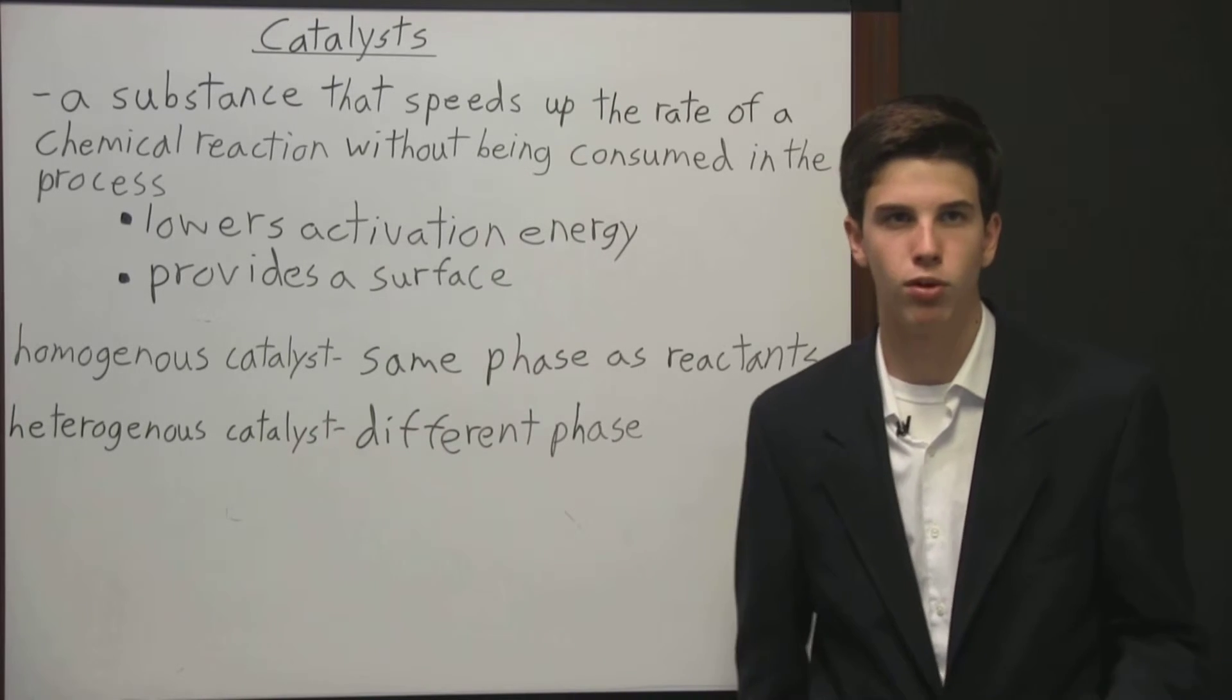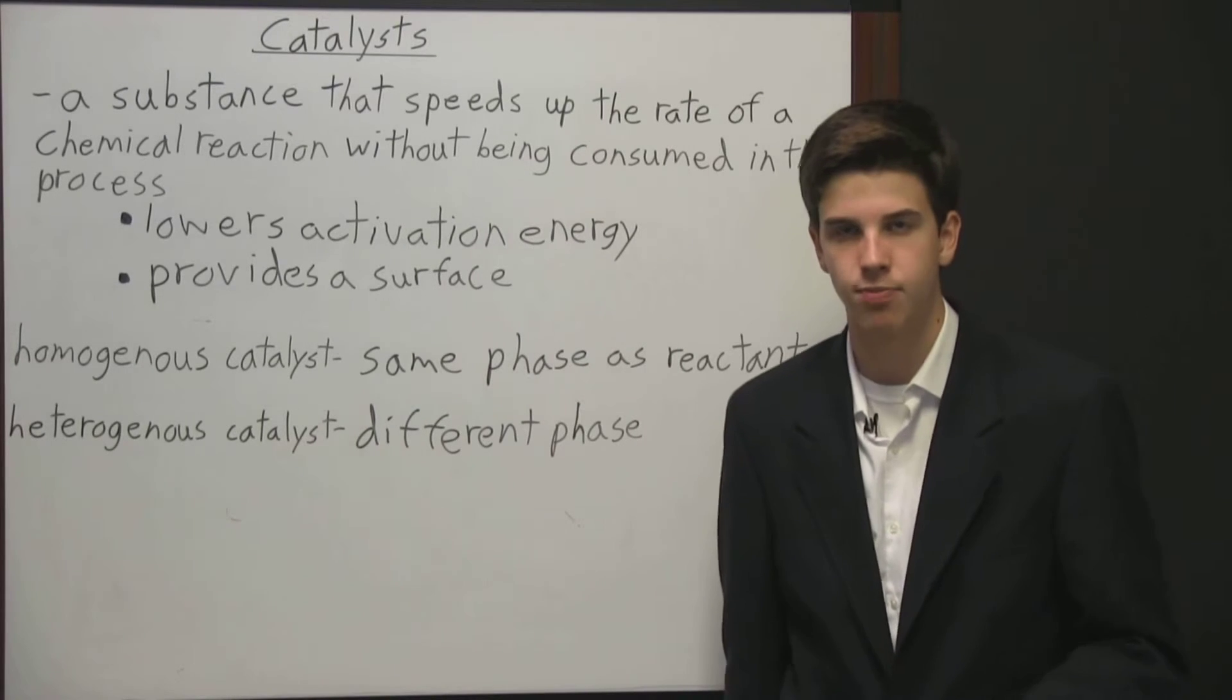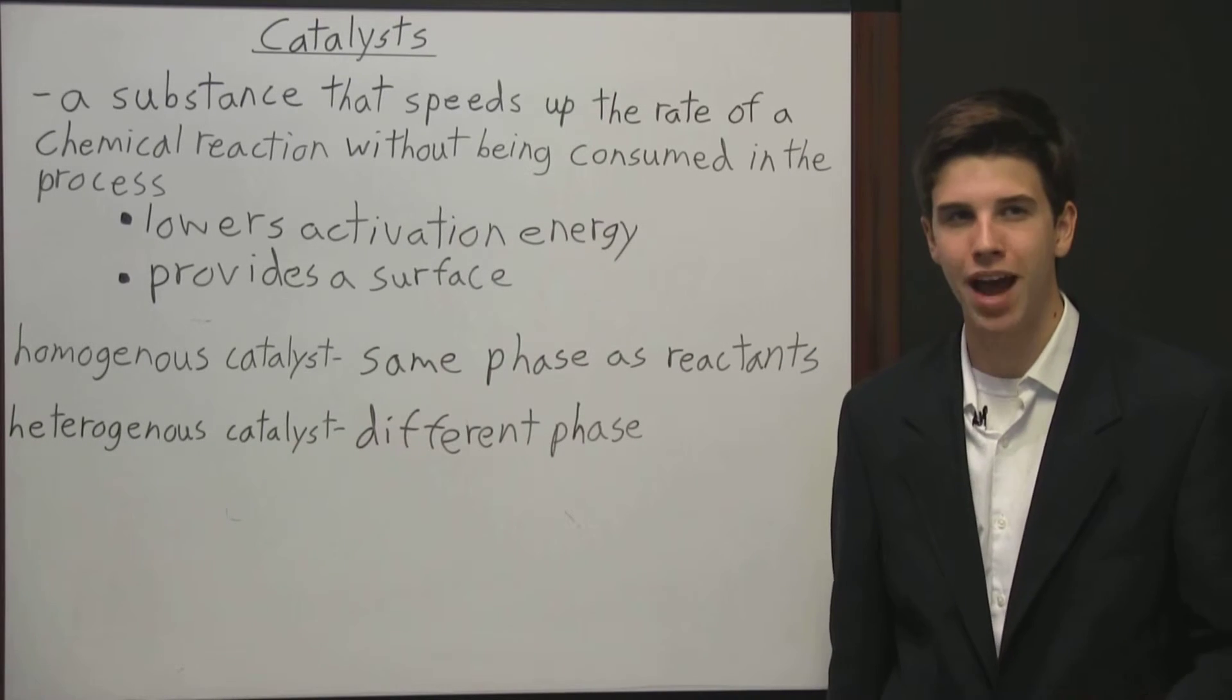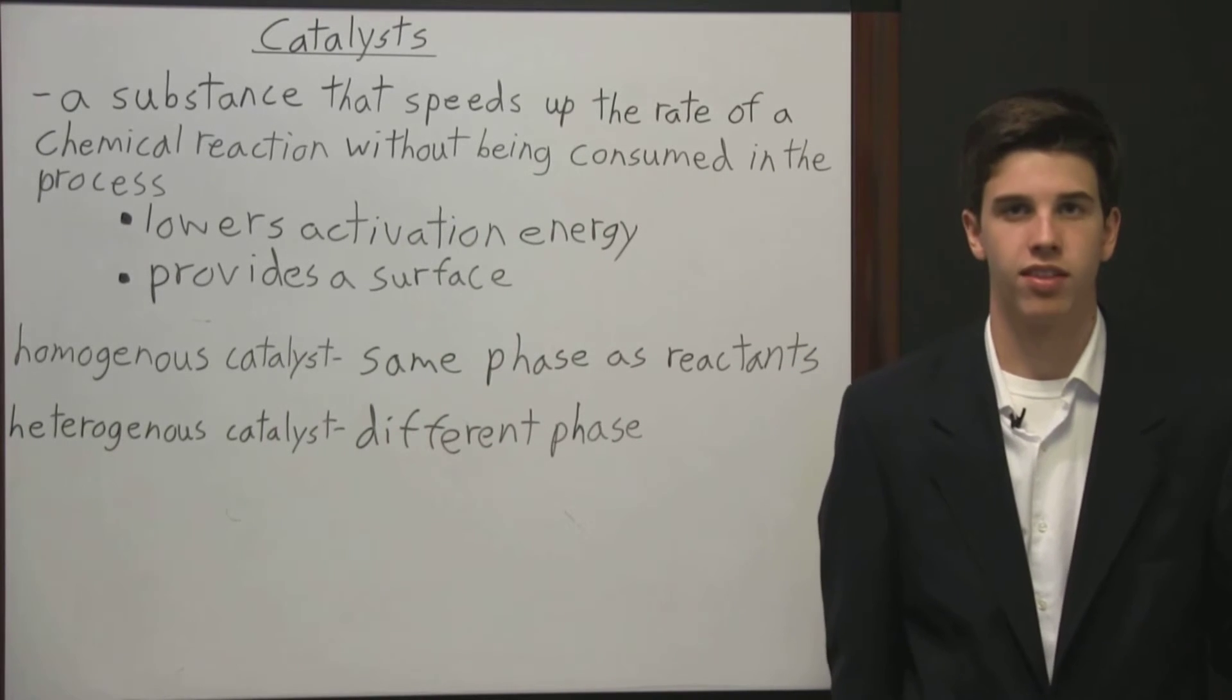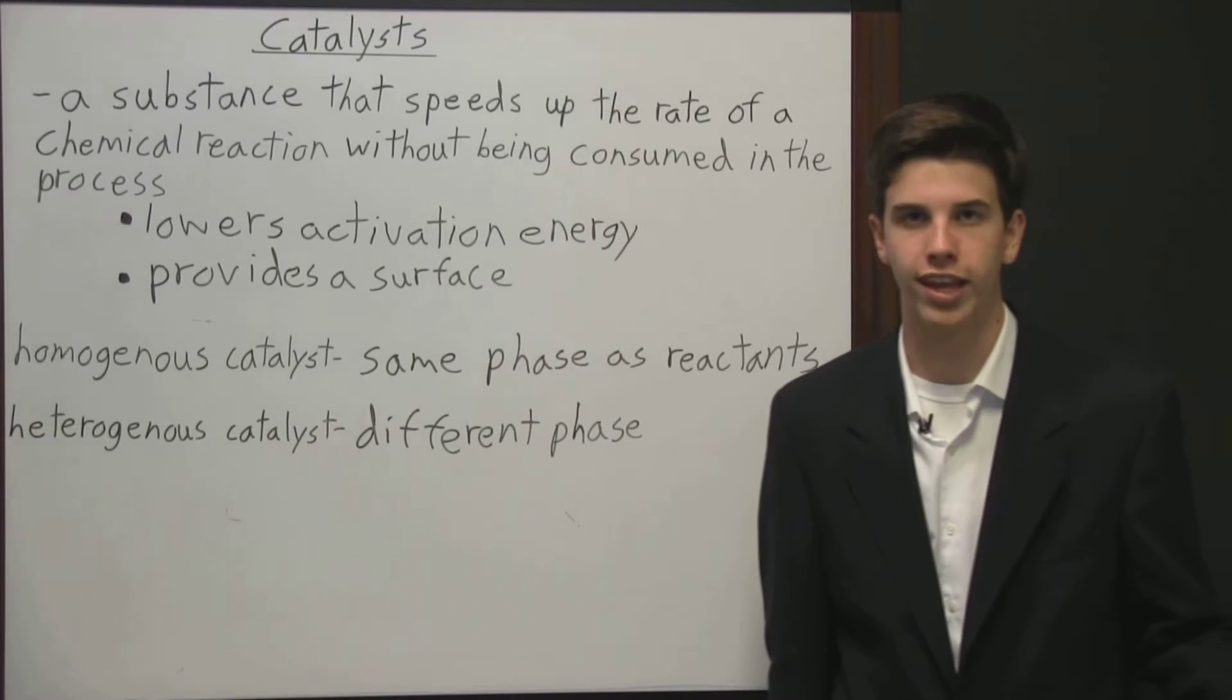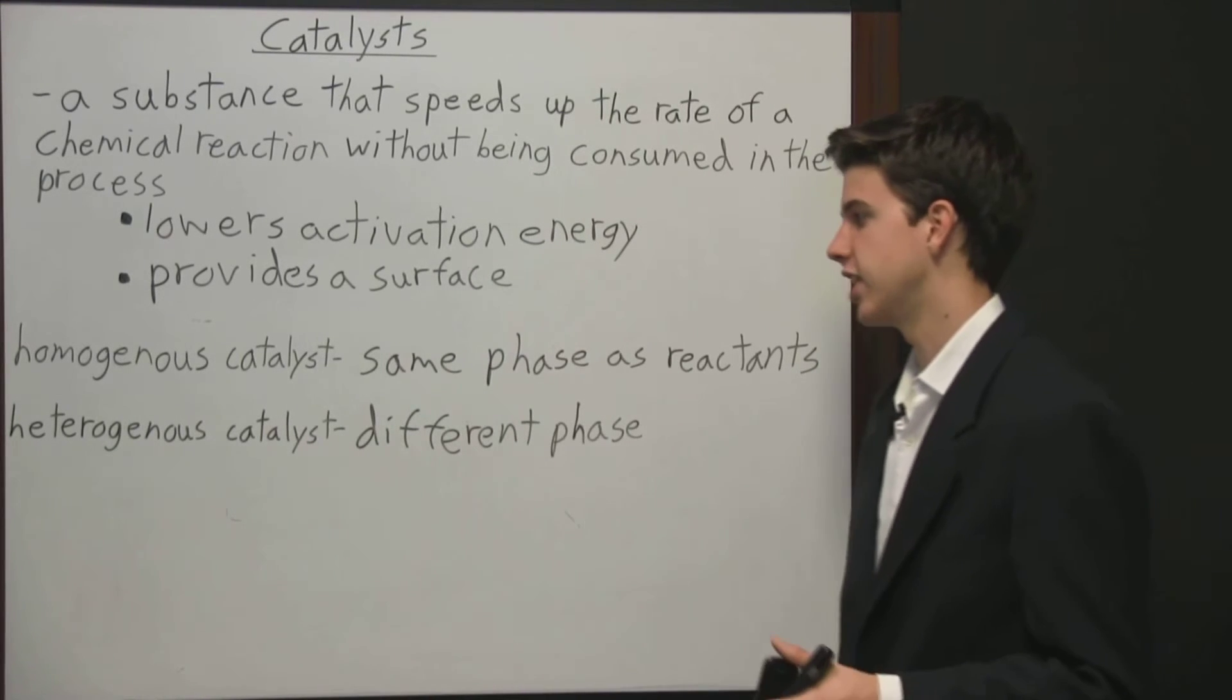Take for example the combination of ethylene and hydrogen gases to make ethane gas. It's catalyzed by adding powdered nickel. You have powdered nickel which is in solid form and everything else is in the gas phase. In that reaction, nickel is a heterogeneous catalyst.